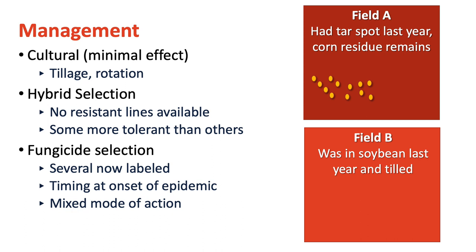For management, you want to use an integrated management scheme. Cultural practices such as tillage and rotation may have a small effect, since the pathogen can be borne on residue, but it tends to disperse relatively far on air currents, so you can still get infections from a neighbor's field. For hybrid selection, remember there's no resistance available, but we do have various levels of tolerance, so you should ask your field representative which hybrid is less susceptible to tar spot.